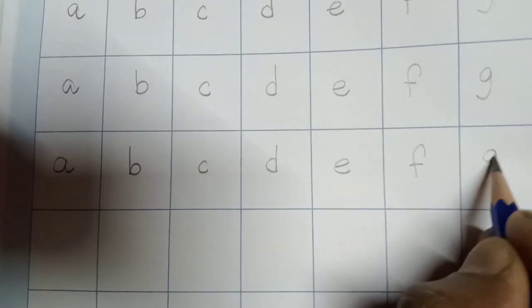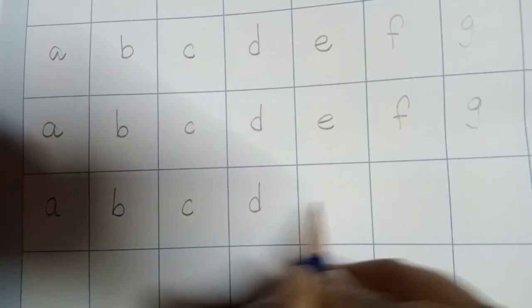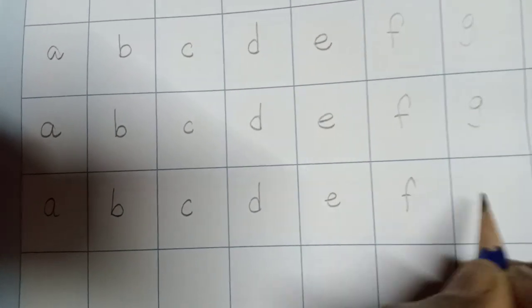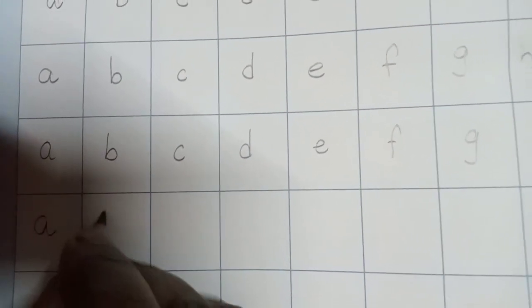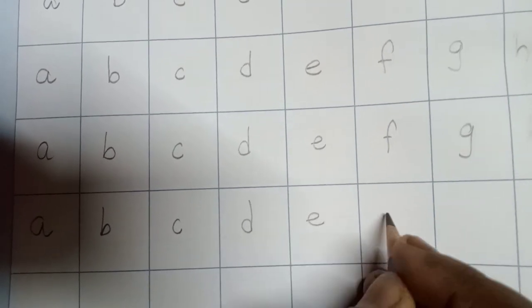Again: a, b, c, d, e, f, g, h. Again you have to write - all are in small letters - a, b, c, d, e, f, g, h.